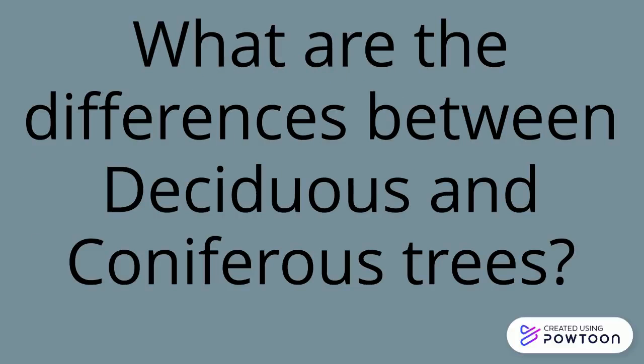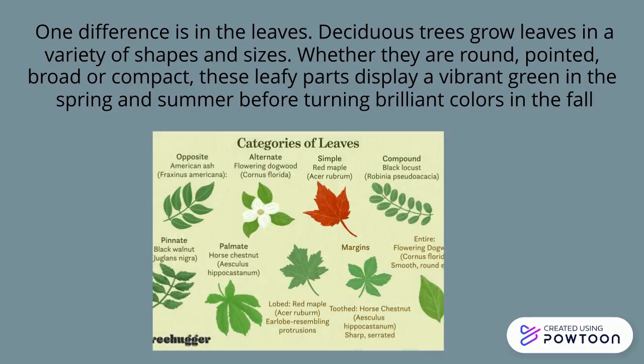For a Geography Minute, what are the differences between deciduous and coniferous trees? One difference is in the leaves. Deciduous trees grow leaves in a variety of shapes and sizes. Whether they are round, pointed, broad, or compact, these leafy parts display vibrant green in the spring and summer before turning brilliant colors in the fall.